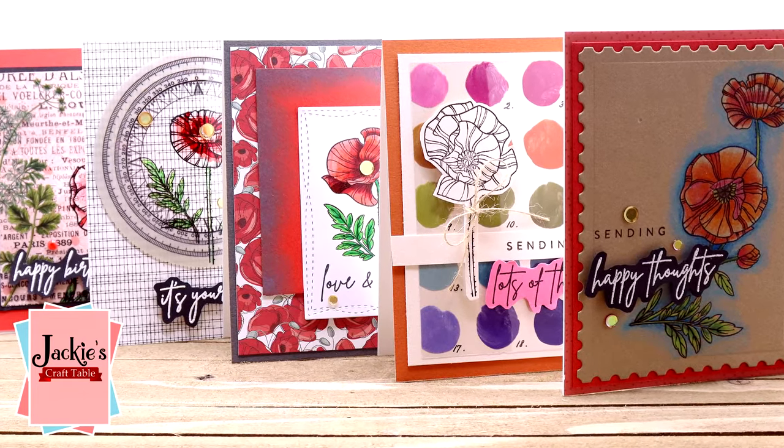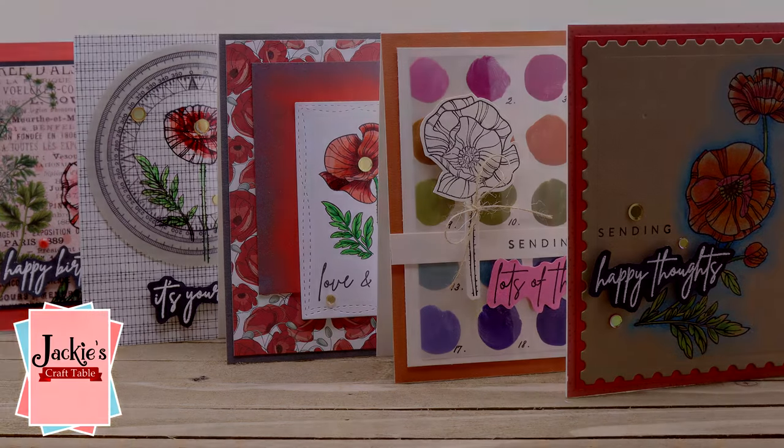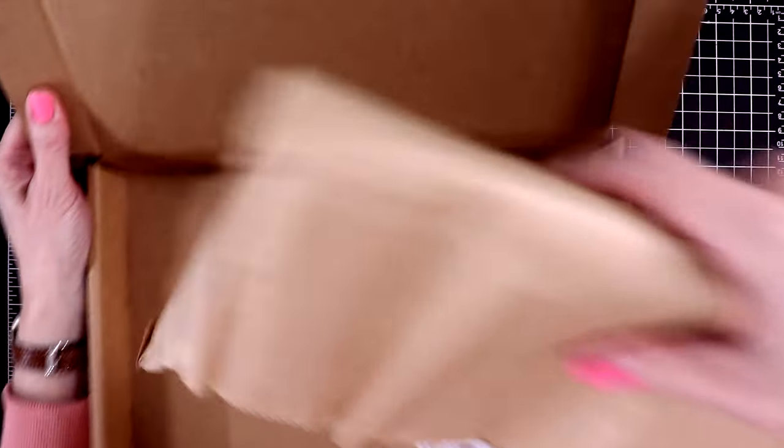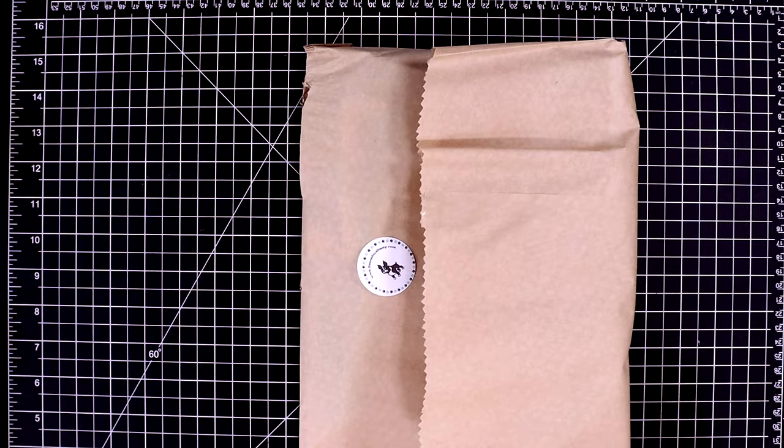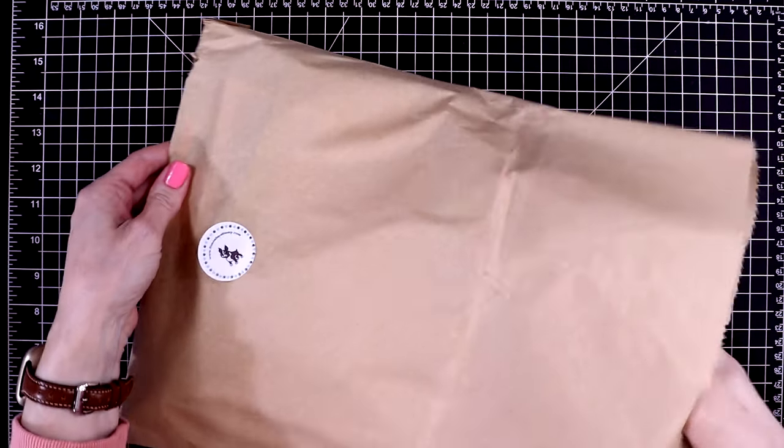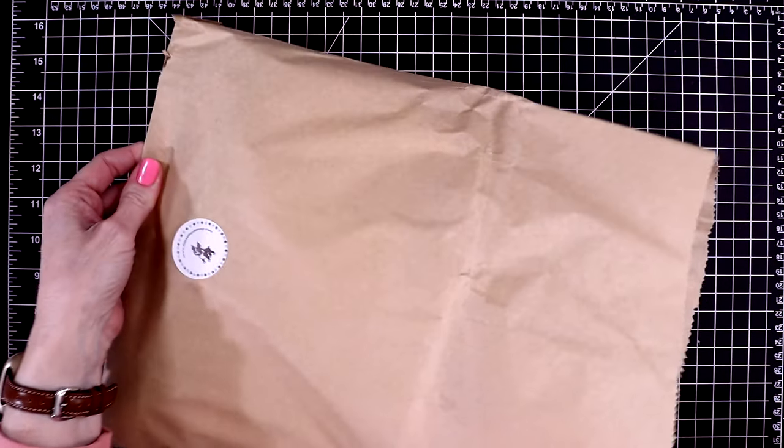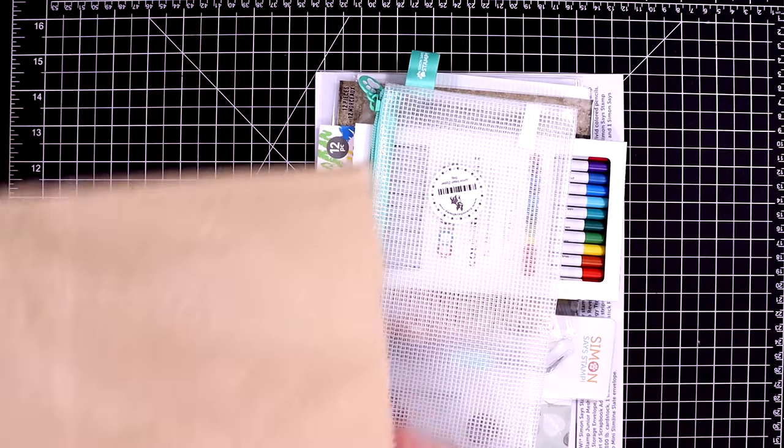In today's video I'm going to be playing with the latest card kit from Simon Says Stamp. This one is for April and it's called Poppy Perfection. I don't buy every single kit that they come out with, but I had to get this one because I love poppies. They're one of my favorite flowers.